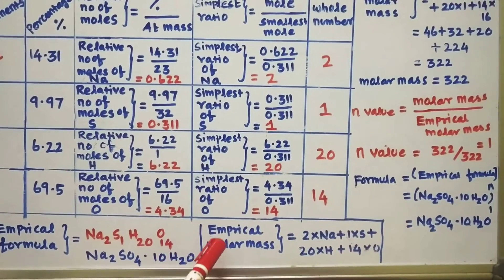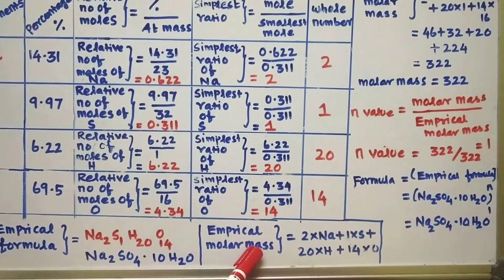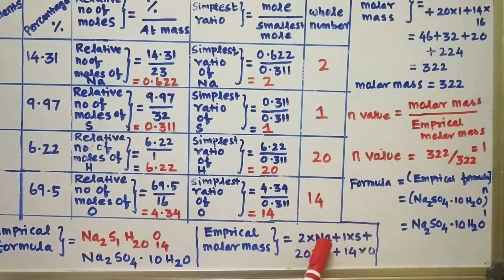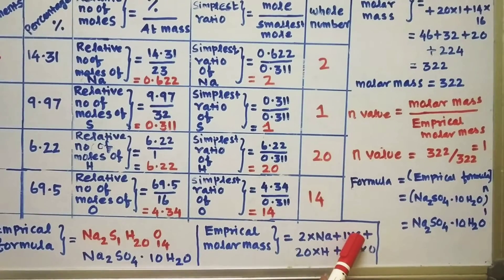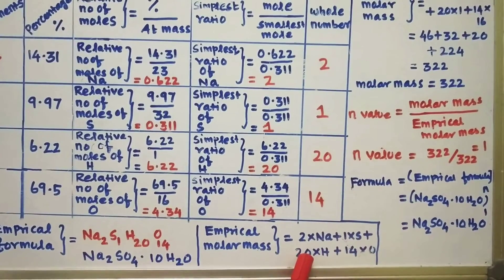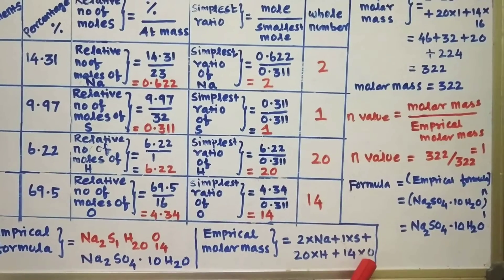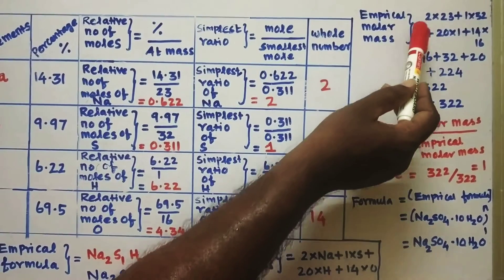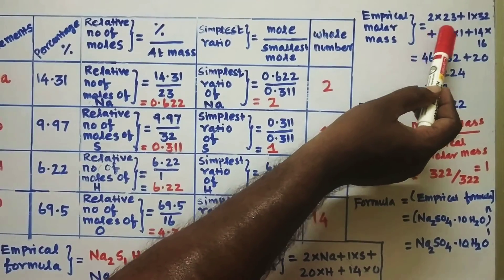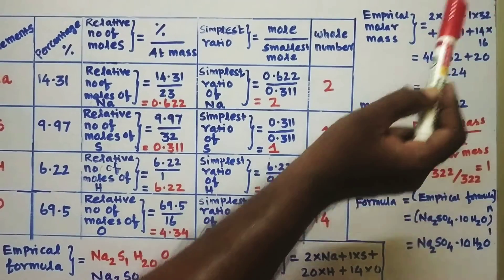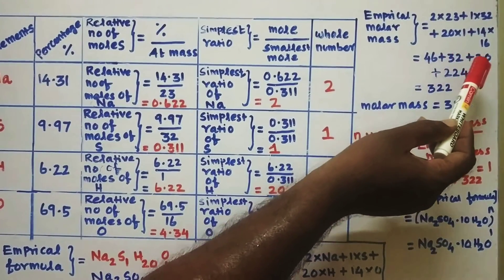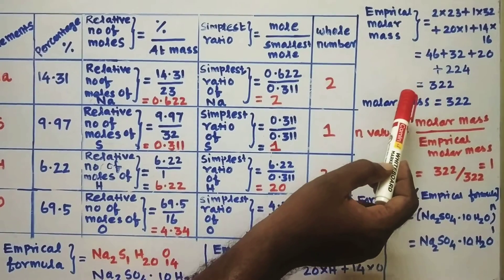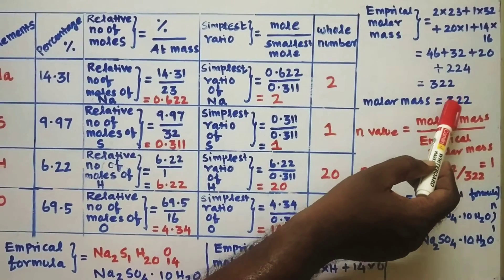Now we calculate the empirical molar mass. The compound contains 2 sodium atoms, 1 sulfur, 20 hydrogen, and 14 oxygen. Empirical molar mass = (2 × 23) + (1 × 32) + (20 × 1) + (14 × 16) = 46 + 32 + 20 + 224 = 322.